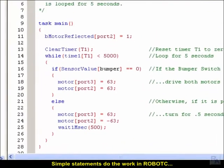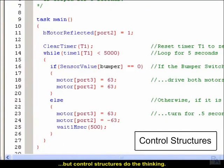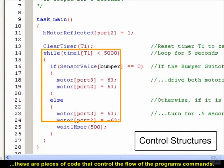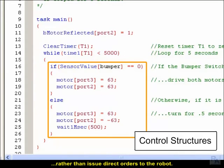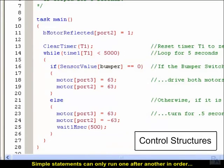Simple statements do the work in Robot C, but control structures do the thinking. These are pieces of code that control the flow of the program's commands, rather than issue direct orders to the robot. Simple statements can only run one after another in order, but control statements allow the program to choose the order that the statements are run.